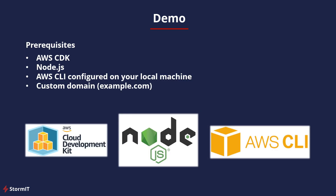For the prerequisites, you will need to have AWS CDK and Node.js installed, and AWS CLI configured with your credentials. Because we are using HTTPS, you should also have a domain that you want to use. I am using stormit.link, our test domain. You will find some links in the description below for AWS CDK, Node.js, and how to configure AWS CLI.